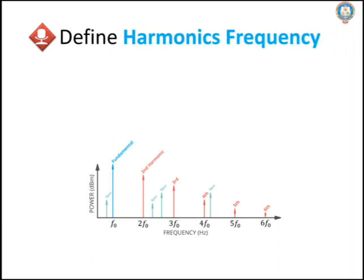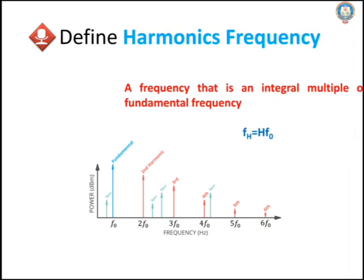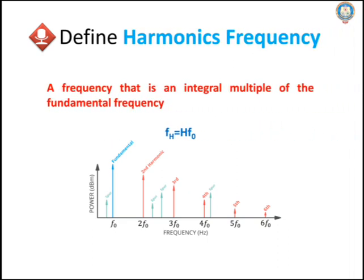Define harmonic frequency. The frequency which is an integral multiple of the fundamental frequency is called harmonic frequency, given by FH = H × F0, where H is the harmonic number and F0 is the fundamental frequency.